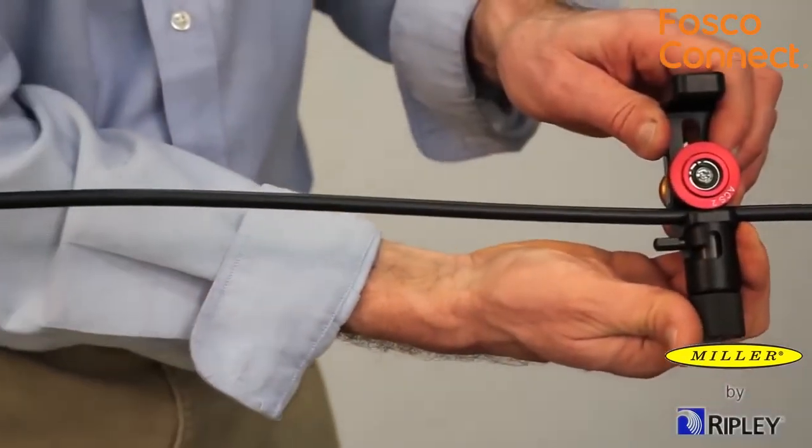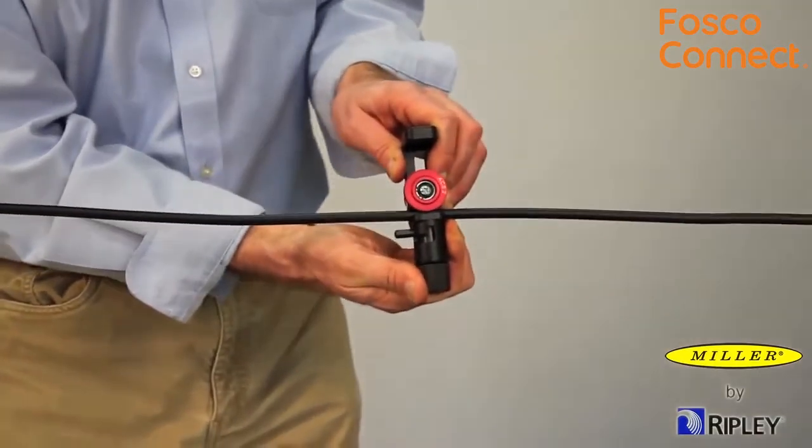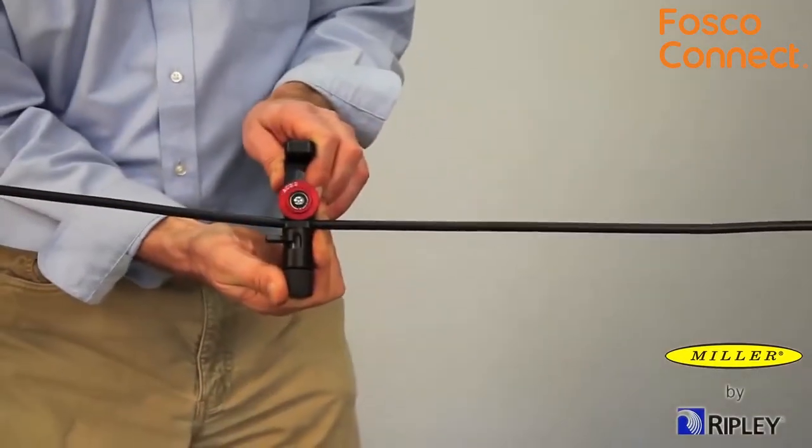Pull the tool down the length of the cable to be stripped. When the blade is set properly, the tool will often create a zipper sound on armored cable.